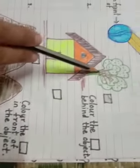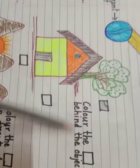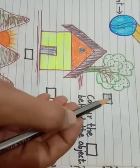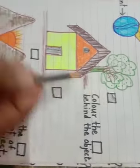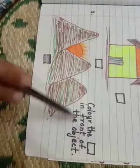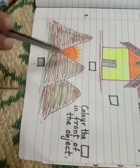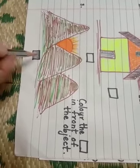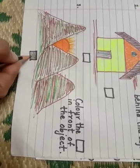House and tree. Color the box behind the object. Which object is behind here? Tree or house? Tree. So, you have to color the box. Color the box in front of the object. Mountain or sun? Mountain. So, you have to color the box.